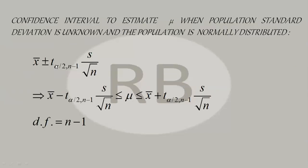T can be positive as well as negative. Solving for mu, we get the lower limit with the minus sign and the upper limit with the plus sign. The parameters of T are: alpha by 2, and n minus 1 where n is the sample size. n minus 1 is called the degrees of freedom. In the table, we need two things: the area in the right tail and the degrees of freedom. From their combination we get the value of T. So we have this confidence interval for the population mean when the population standard deviation is unknown and the population is normally distributed. Always remember the underlying assumption before using T-statistics is that the population is normally distributed.